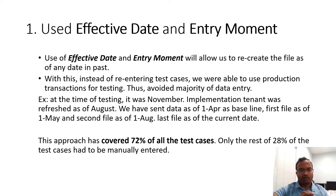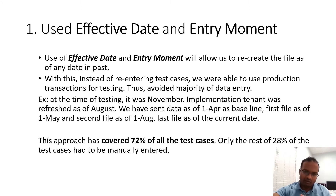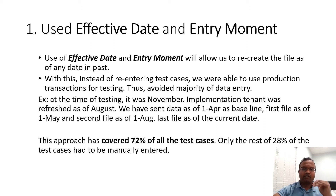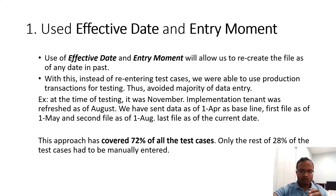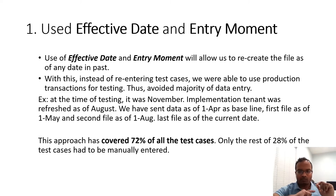This saves not only data entry time but also documentation and coordination. As an example, we did our testing in the month of November. I convinced the business to use April 1st data as a baseline, and we planned three rounds: Round 1 as of May 1, Round 2 as of June 1, and Round 3 as of today.